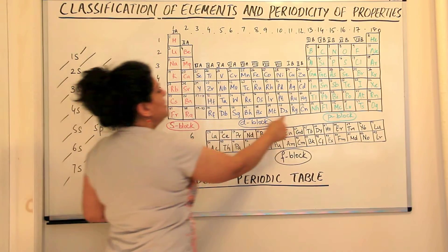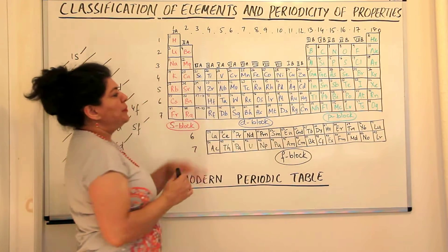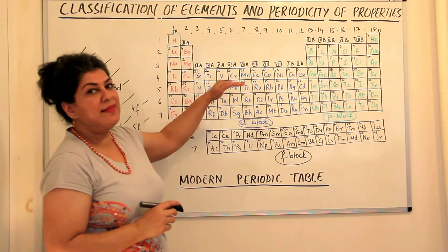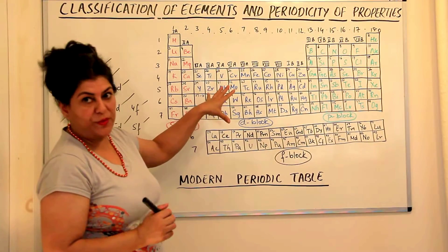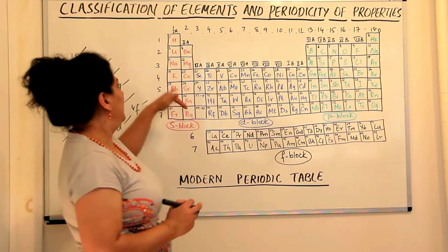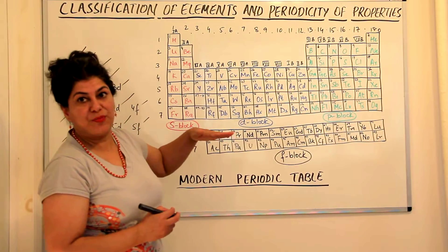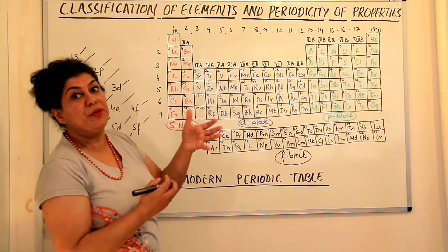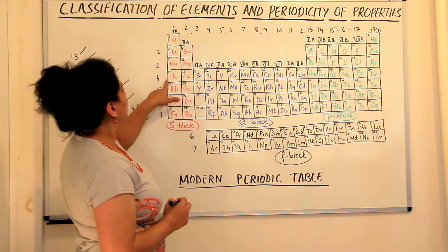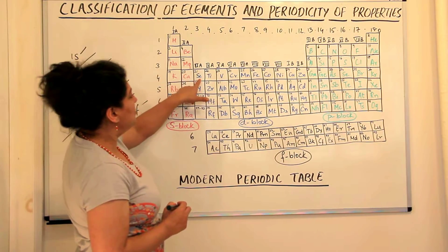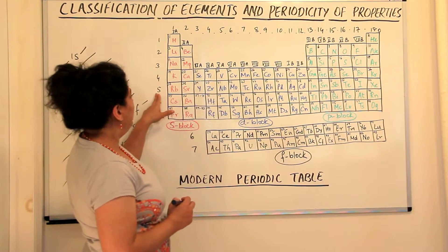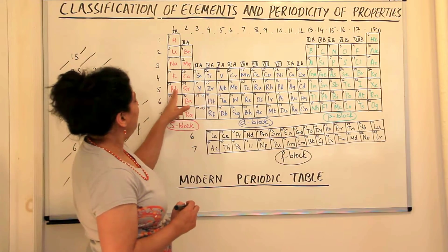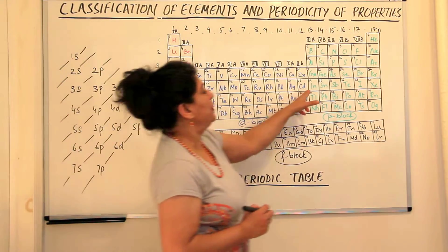So you could say the d block elements, the principal quantum number, they do not lie in the same group as the principal quantum number. They lie in one group after the actual principal quantum number they belong to. So here after 4s, it is 3d which is being filled up and here after 5s, it is 4d which is being filled up.